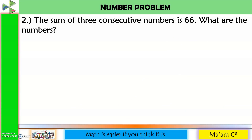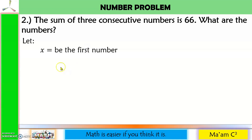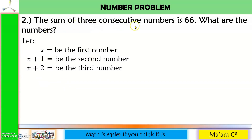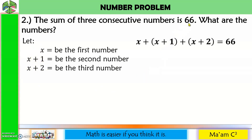The sum of 3 consecutive numbers is 66. What are the numbers? The first number is unknown, so let X be the first number. The second number is X plus 1, and the third number is X plus 2. The sum of 3 consecutive numbers is 66, so our working equation is X plus (X plus 1) plus (X plus 2) equals 66.